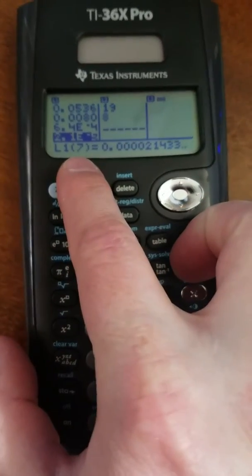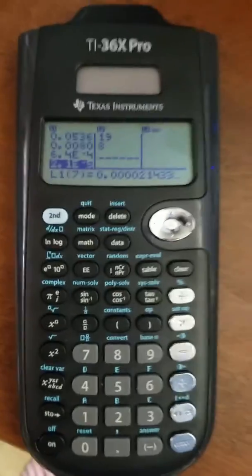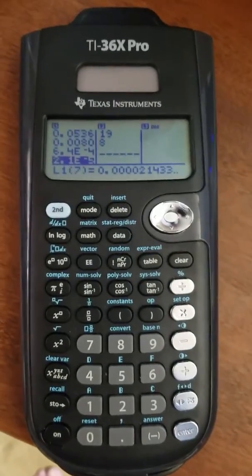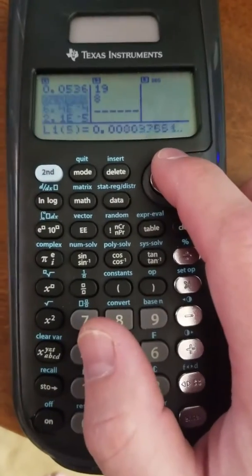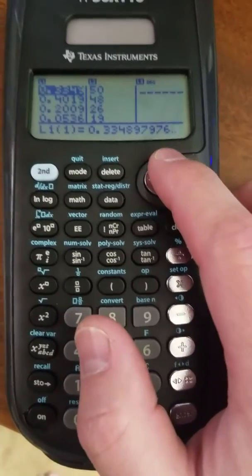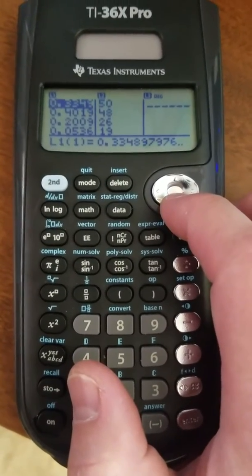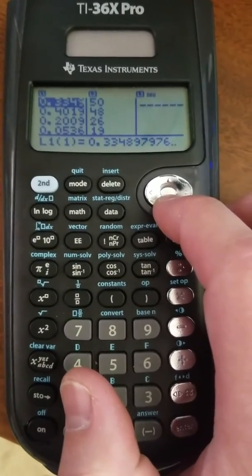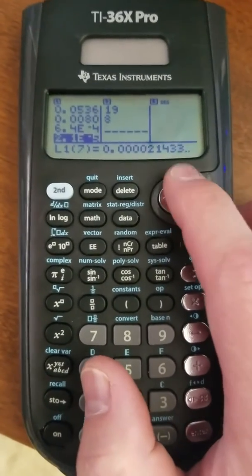Now be careful about the index on your list here. List 1, index 7 is the probability of 6 successes. This is because the list starts out at index 1 instead of starting out at index 0. That's why those numbers are slightly off. But this gives you all the probabilities. If you were to sum all those up, it would sum to 1.